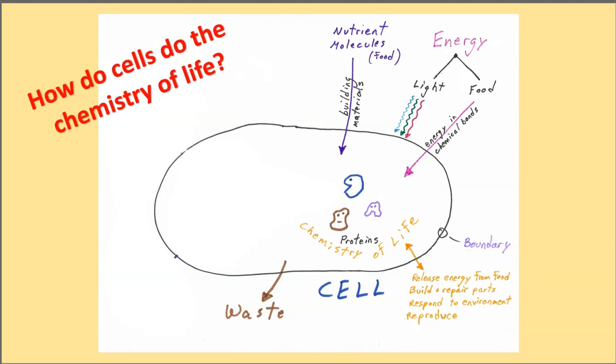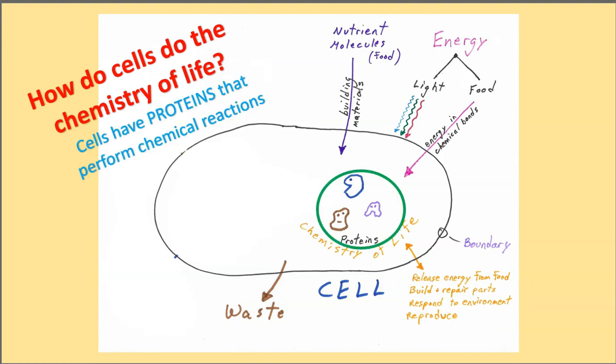How do cells do the chemistry of life? They have teams of proteins that perform a wide variety of different kinds of chemical reactions. Some of those proteins are going to be getting energy out of their food. Some of the proteins are going to be building molecules that the cell is made of.